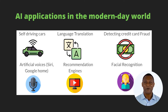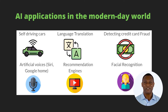Another example is language translation. You might have used Google Translate when you visited a new country to translate a given sentence in your language to a sentence in a foreign language. Another example is credit card fraud — if there is a transaction suddenly from a new country or from an unusual origin, there are AI systems built by credit card companies that flag it and send secondary verification to your email or phone number.